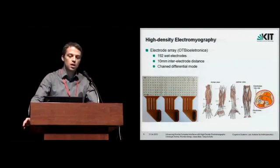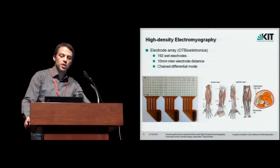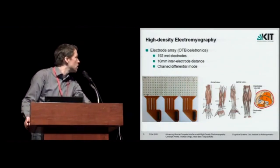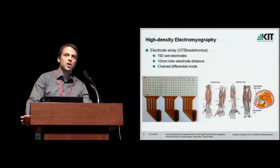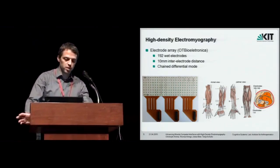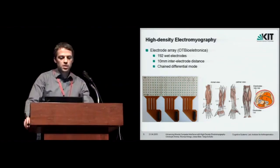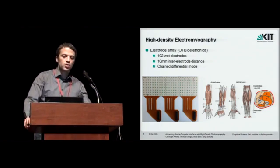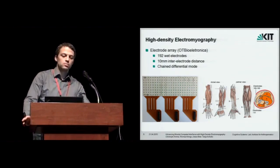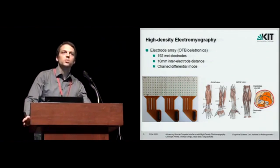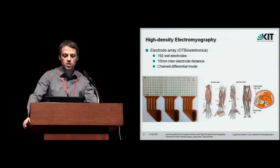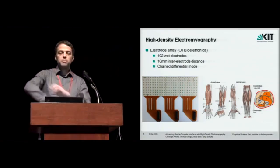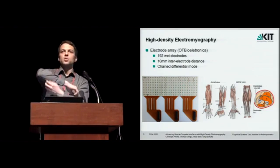So we use, as I said, high density electromyography. Here you can see one of the arrays we used. So this is off the shelf hardware. We didn't actually build the hardware. So the array has 192 electrodes and it allows to get an image of the signals with a high spatial resolution. The inter-electrode distance is 10 millimeters and we wrap the array around the forearm so it's flexible.